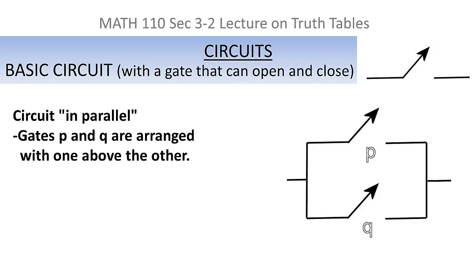The second type of circuit we'll talk about is a circuit in parallel. This time, the circuit P and the circuit Q are parallel to each other. They're not on a line together. One is above the other. That's called a circuit in parallel.